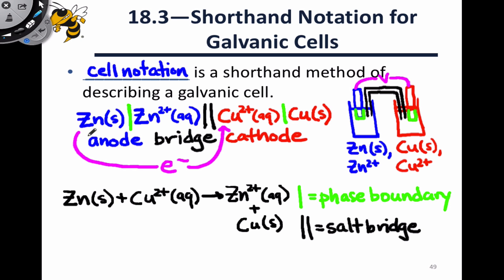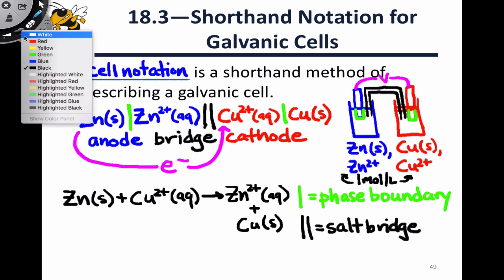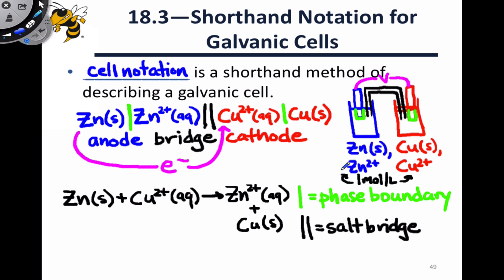One final thing that's worth noting here is that if concentrations are not listed, we assume that we're under standard conditions, that is one mole per liter of all aqueous species, in this case the Cu2+, and the Zn2+. Whenever we're not under standard conditions, we need to indicate the concentrations of aqueous species.